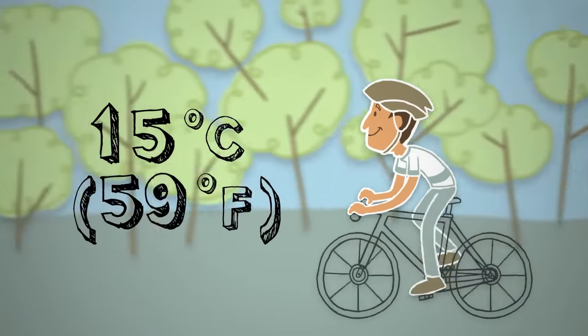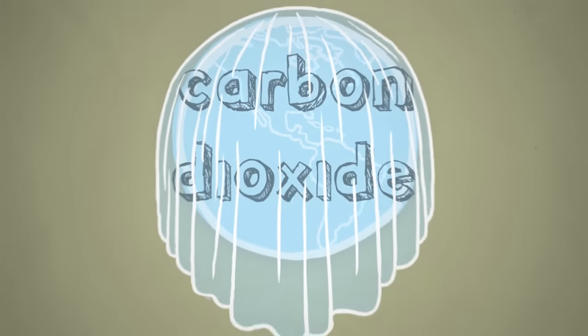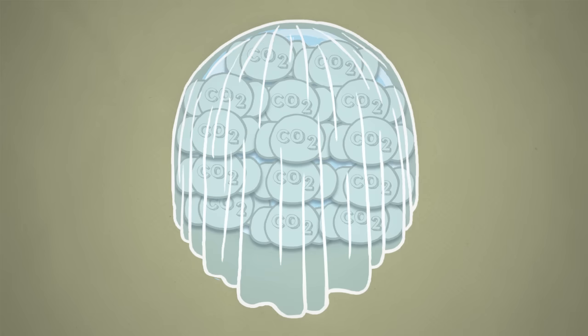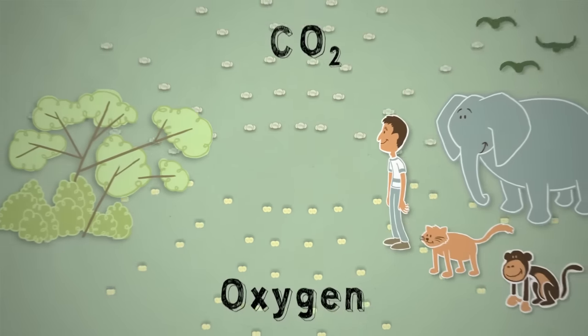One of the gases in Earth's blanket is called carbon dioxide, or CO2. Carbon dioxide is everywhere on Earth, actually, and it's an important part of Earth's delicate balance of life.